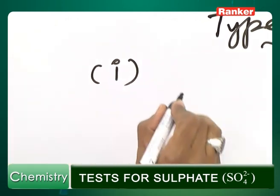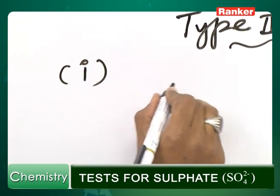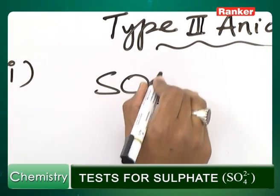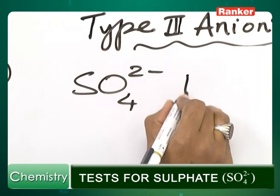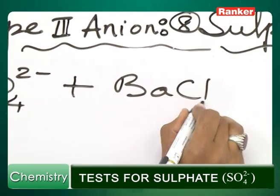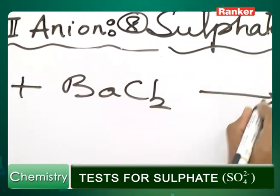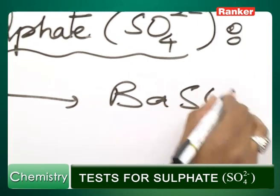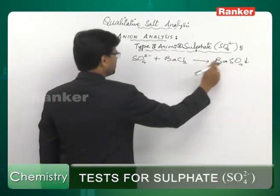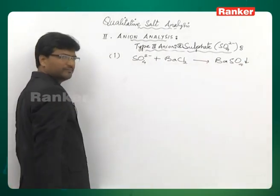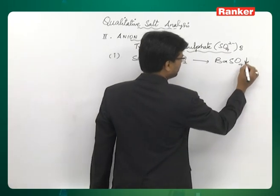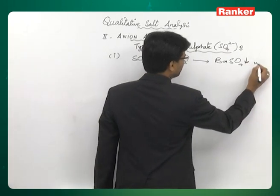The first reaction is sulphate plus barium chloride. You get a white precipitate of BaSO₄. This is insoluble in dilute mineral acids. You get a white precipitate of barium sulphate.